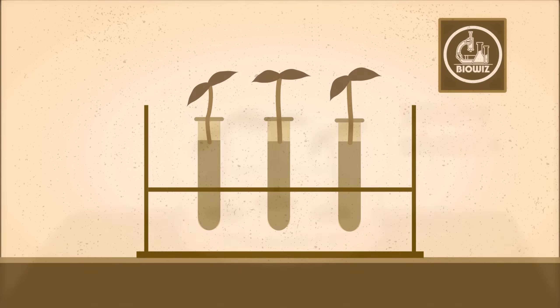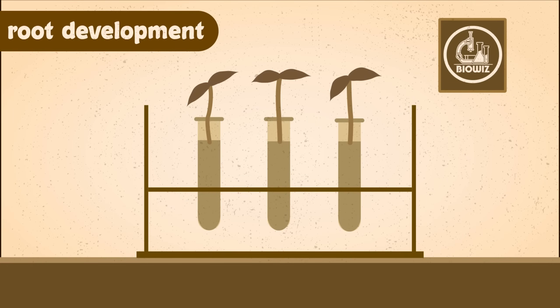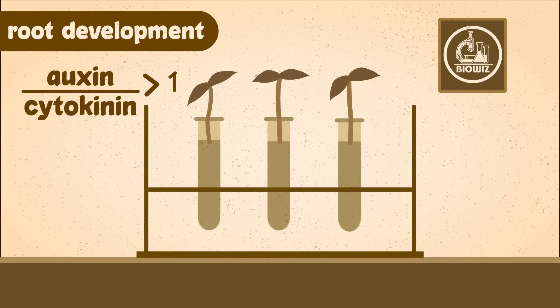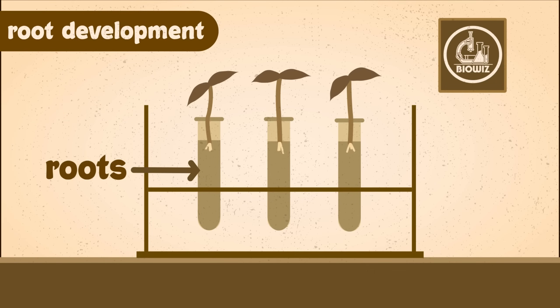For the development of roots, the young stems are placed in test tubes containing a liquid medium with the auxin to cytokinin ratio being more than one — that is, more auxin than cytokinin. This promotes the development of roots from the base of the stem.